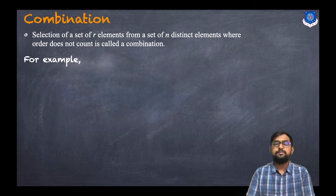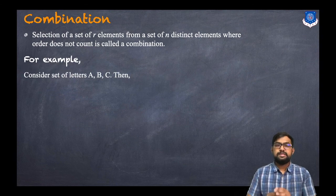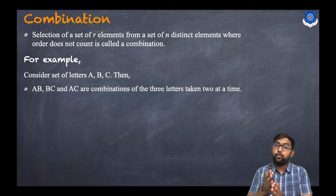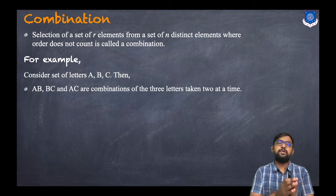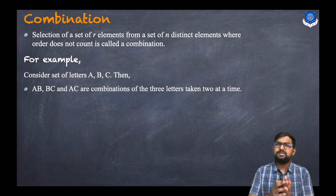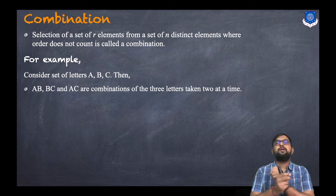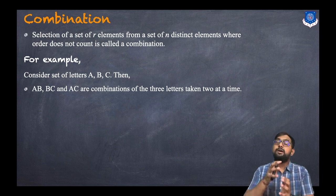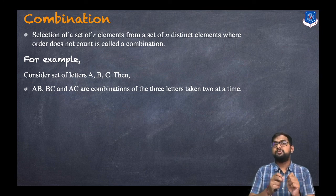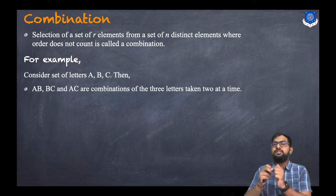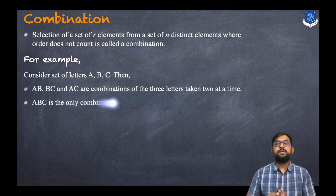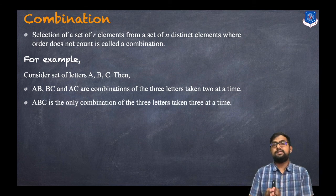For example, consider the set of letters {a, b, c}. Then 'ab' and 'ac' are combinations of the three letters taken two at a time. Here it is a selection — selecting 'ab' or 'ba' does not change the selection because both elements are the same. But for arrangement, order matters: 'ab' and 'ba' are different. So in combination we just select without considering order. Similarly, 'abc' is the only combination of three letters taken three at a time.